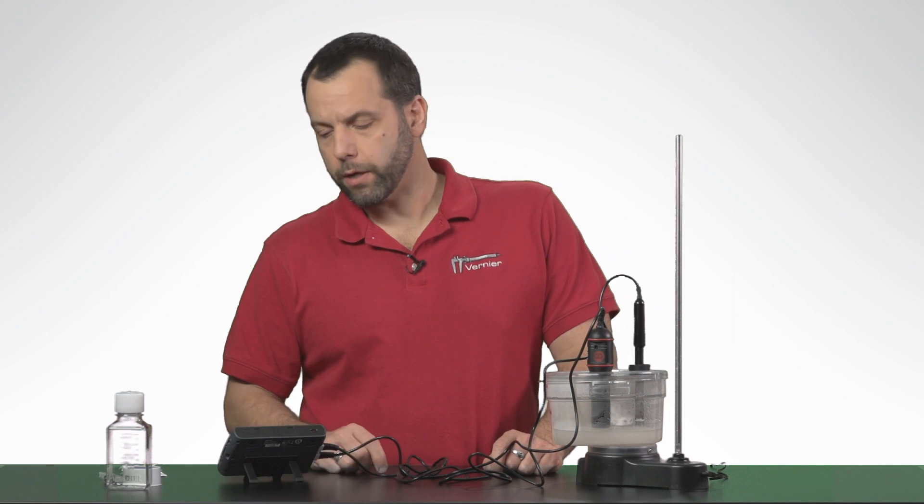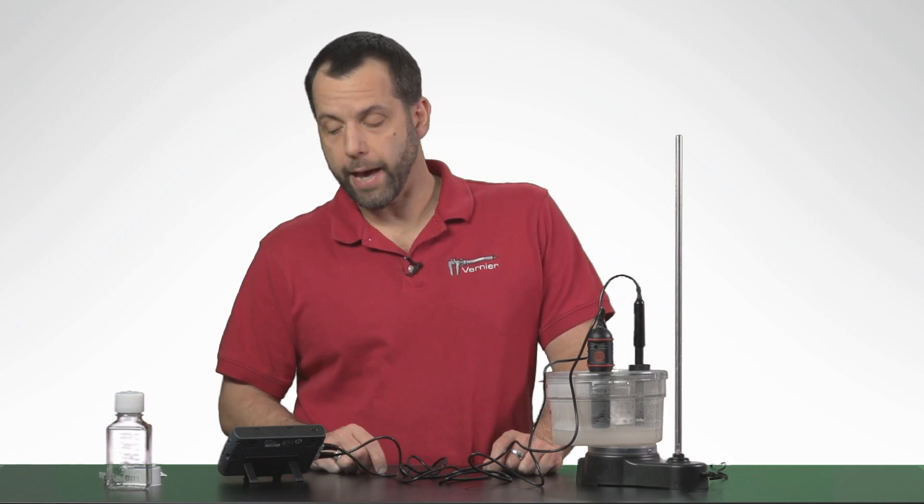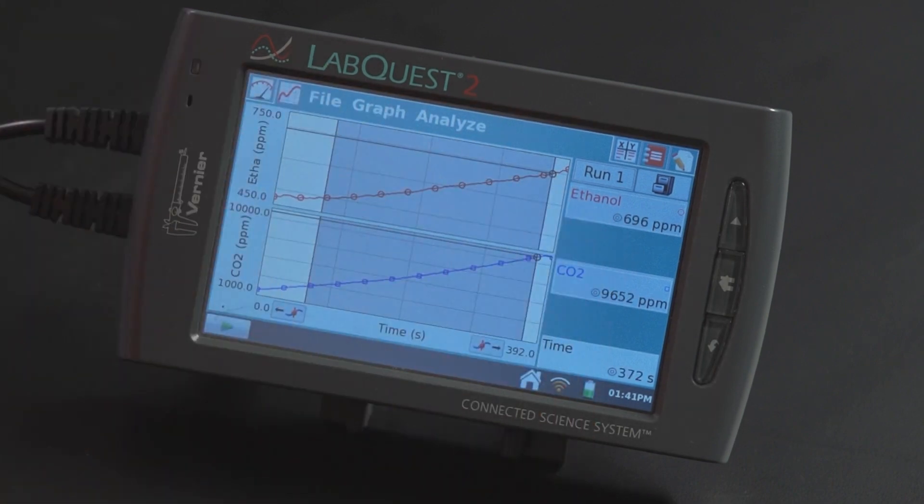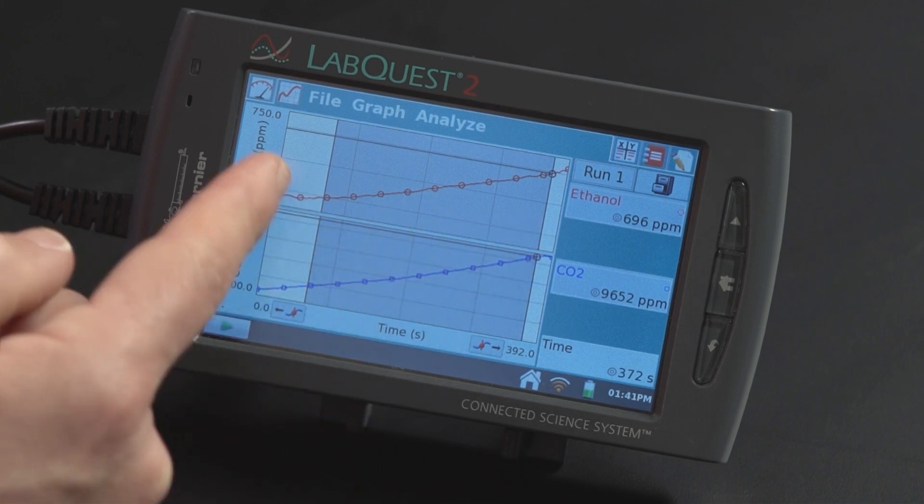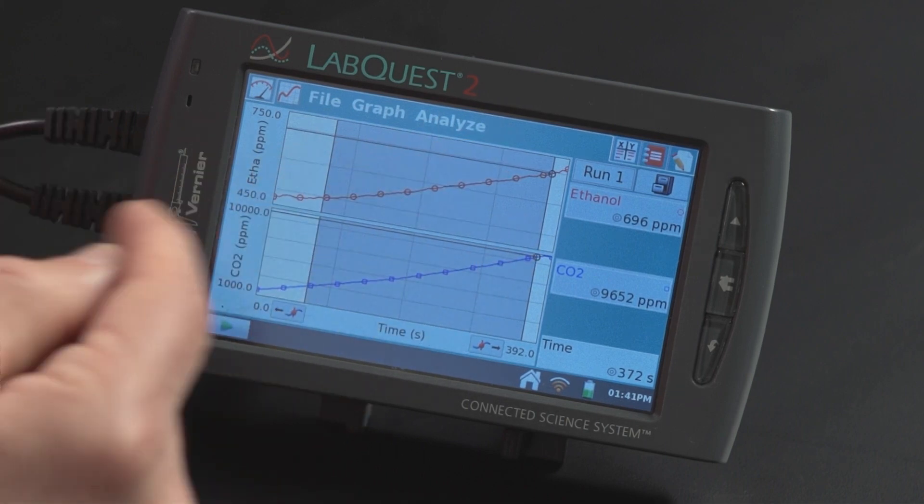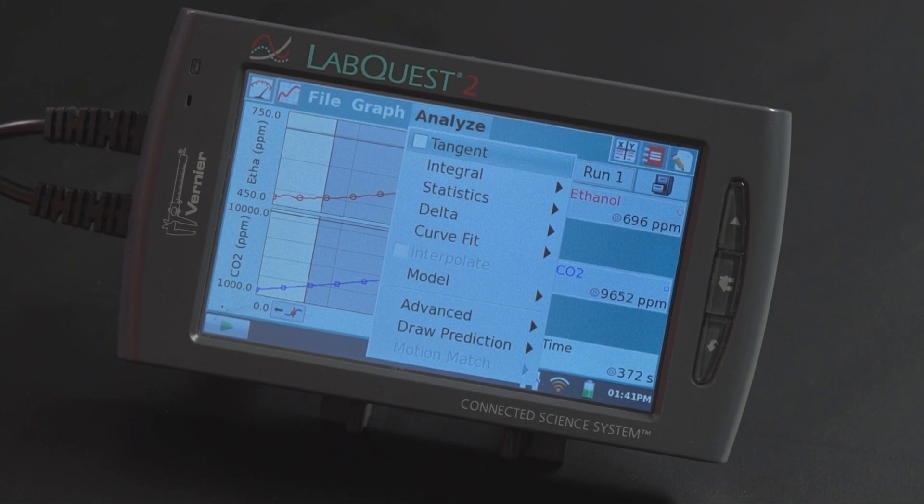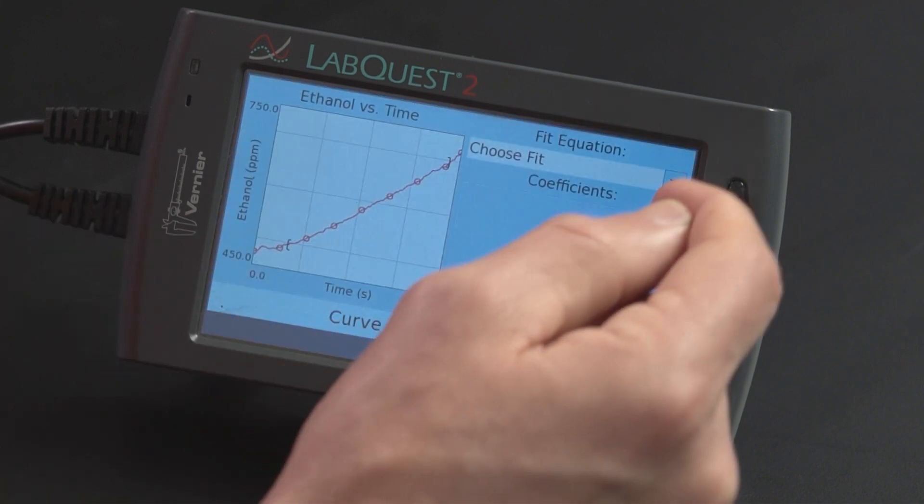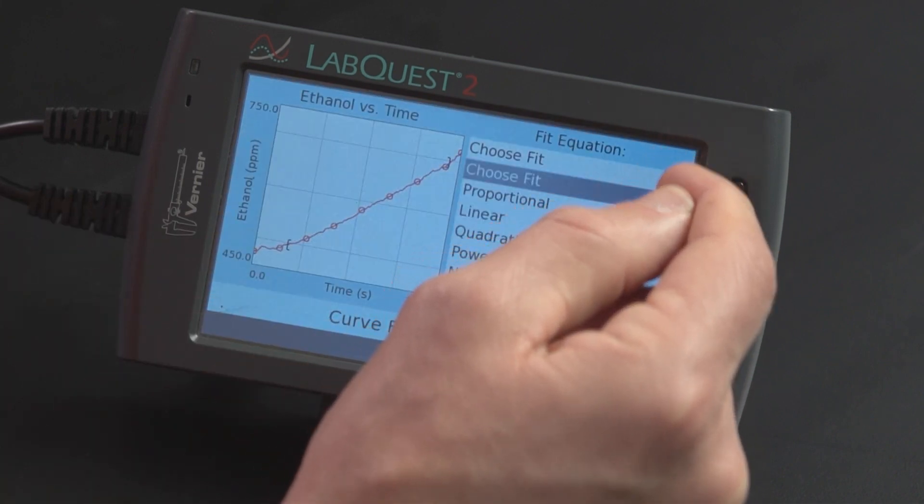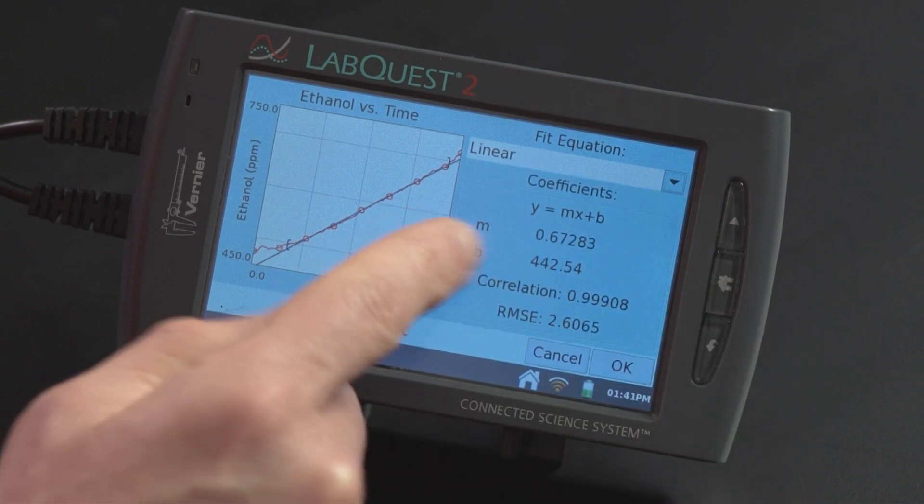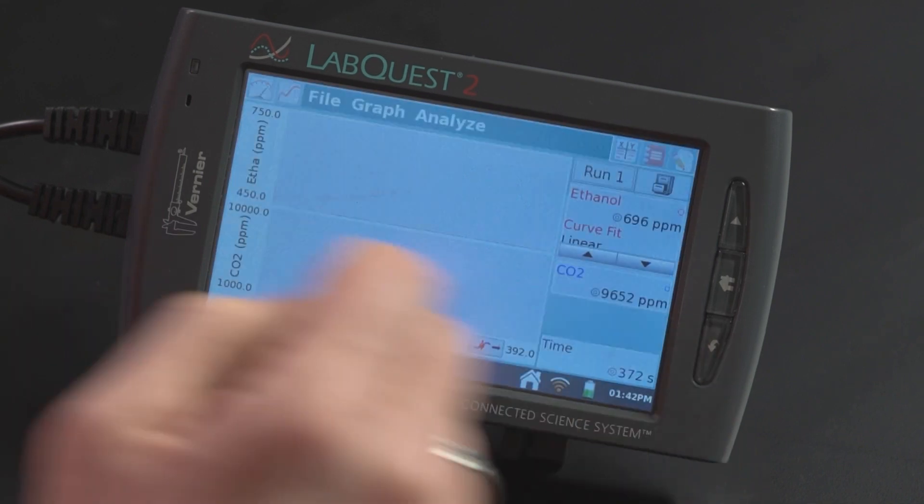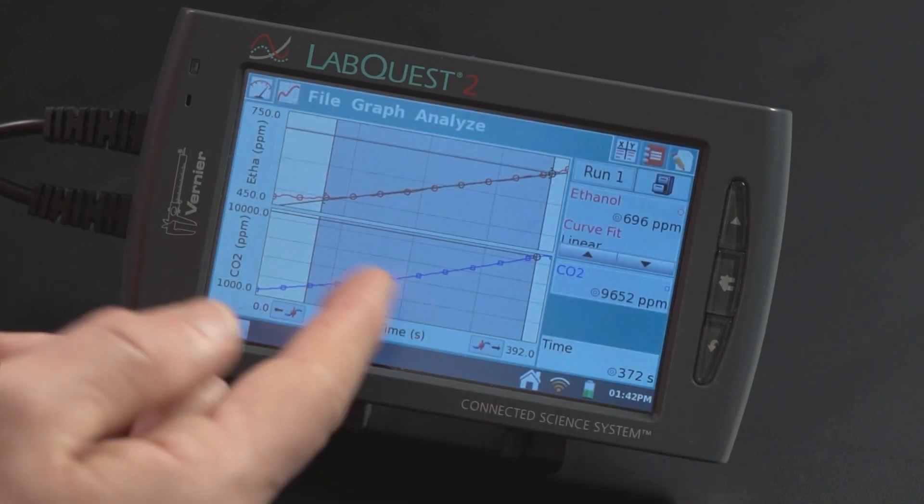So let's just take a quick look and find the rate of production of both of these gases. If I tap on the graph and drag across, that's a nice little region where we see that it's increasing. I can just tap on Analyze and I can select Curve Fit and then I can pick either one that I want. I can pick Ethanol and then I'm going to choose Linear. And you can see that the slope there is about 0.67.